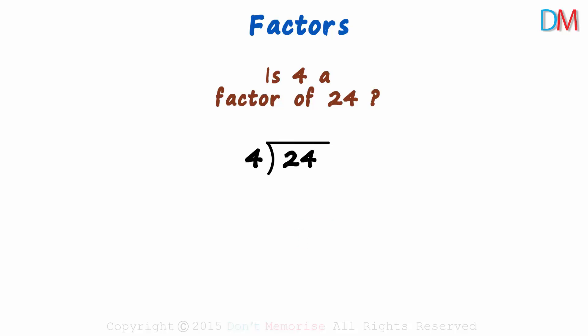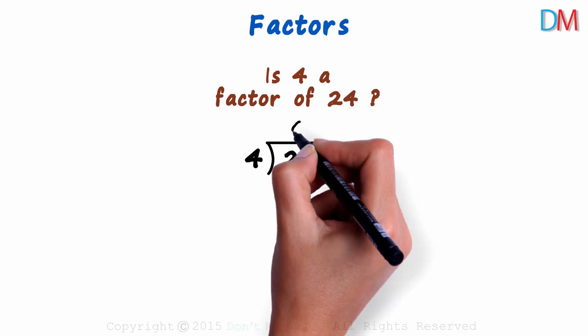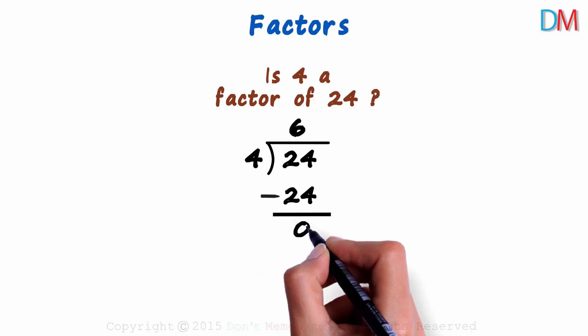Is the remainder 0 here? If we divide 24 by 4, we get the quotient as 6 and the remainder as 0.